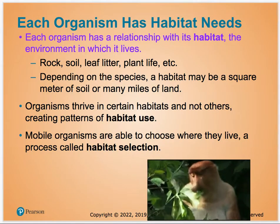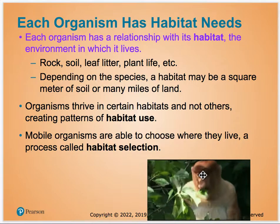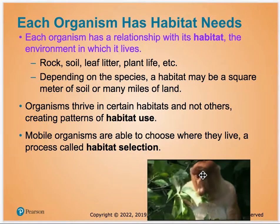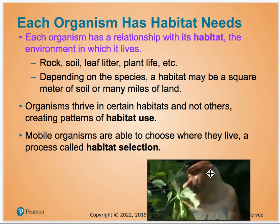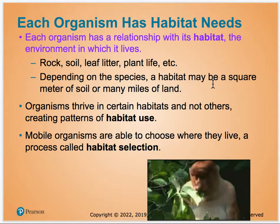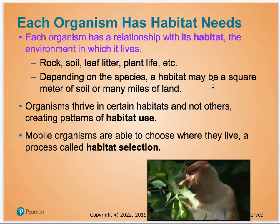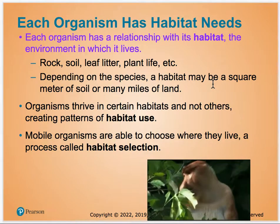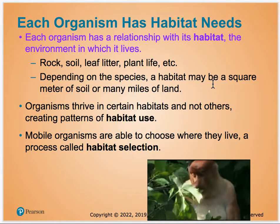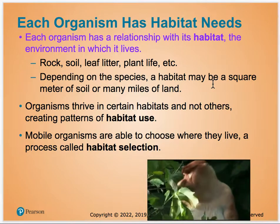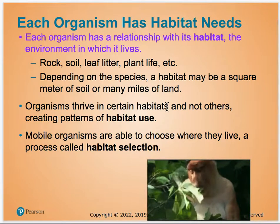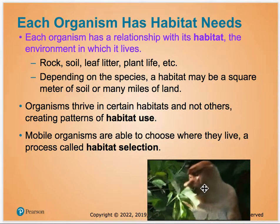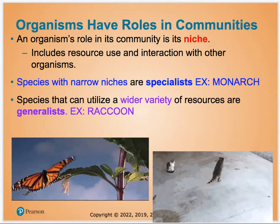Each organism has specific needs or a role it plays in the environment where it lives. This is a proboscis monkey from Borneo, where I got to study. It plays a certain role in pollinating, building habitats, and in its whole ecosystem. If this animal is removed, there is a gap in that ecosystem.